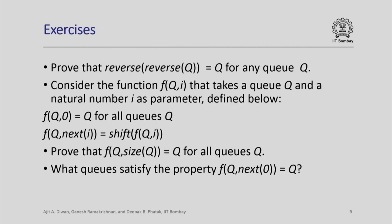Here are some exercises you can try. First, prove that reverse(reverse(queue)) equals queue for any queue. Now consider a function f(queue, i) where i is a parameter: f(q, 0) = q for all q, meaning if i is 0 it does nothing; and f(q, next(i)) = shift(f(q, i)). Prove that applying shift the size(q) number of times returns the same queue.